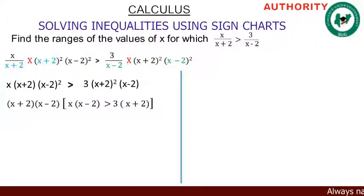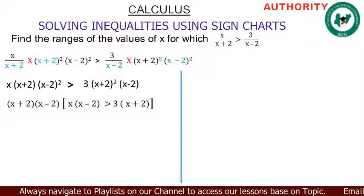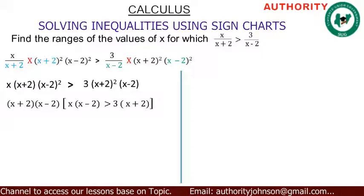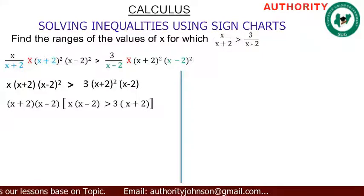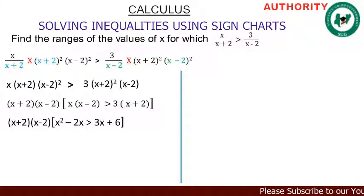So inside the big bracket we have: on the left, x·(x-2), and on the right, 3·(x+2). Expanding: left side gives x²-2x, and right side gives 3x+6. So we have (x+2)(x-2) times [x²-2x] greater than [3x+6].